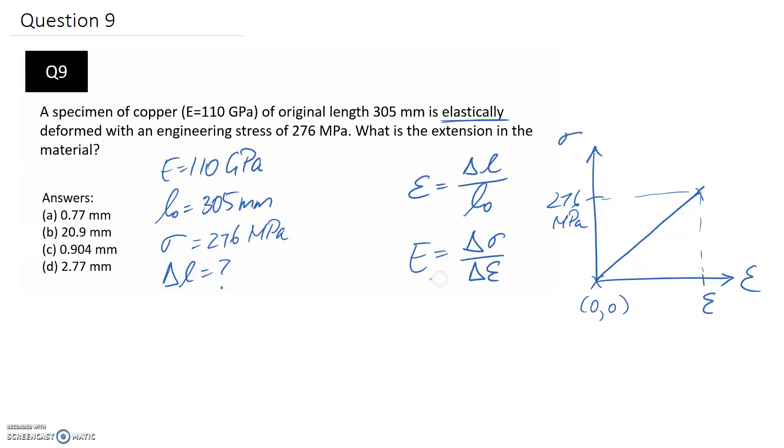So substituting into this, Young's modulus is 110 gigapascals. Now just watch out the units. You probably want both Young's modulus and the stress to be in the same units. So to achieve that, I'm going to convert gigapascals into megapascals, which is the same as multiplying by 10 to the 3.